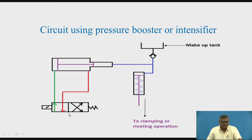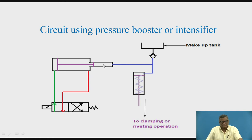Now see the circuit diagram. We have a 4-by-2 direction control valve — solenoid operated and spring retained. P is presently connected to A, going to the left-hand side of the intensifier where the area is larger. We are supplying the low-pressure fluid, which may be gas, air, or liquid. Because the piston cross-section area on the other side is smaller, it delivers high-pressure oil, which comes out on the liquid side.